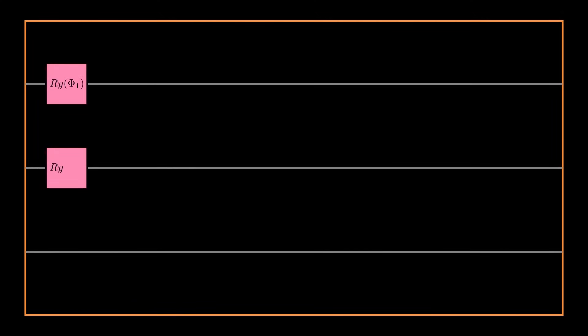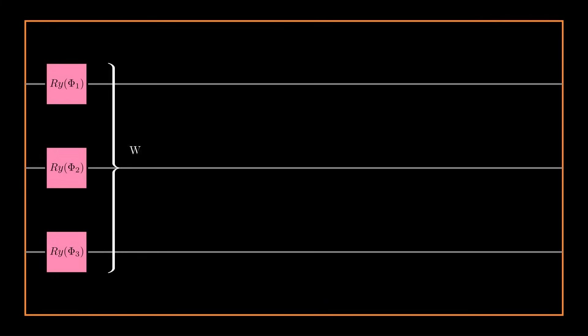Let's talk about the hidden layers of a quantum neural network. The first component of a hidden layer are the parameterized rotational blocks. Just like the input layer, these can be R-Y, R-X, or R-Z. The parameters of these gates are trainable, and hence these gates are similar to the weights in a classical neural network.